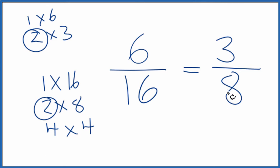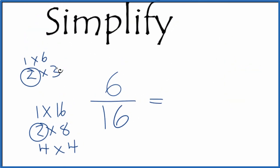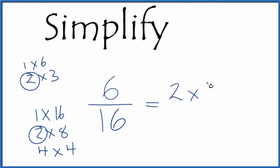There is one more way we can think about this. You could say 2 times 3, that equals 6. And 2 times 8, that equals 16. Since we have 2 on the top and the bottom, we can cross that out. And we're left with 3-eighths. That's what we got before.